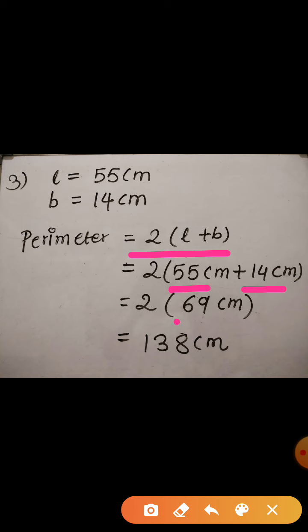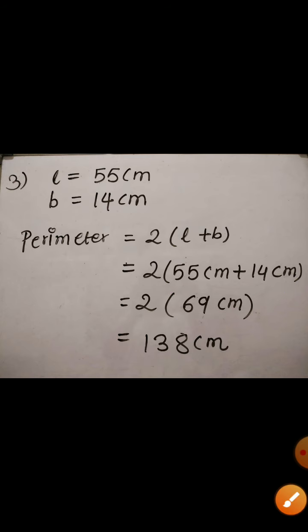Now 55 plus 14 will become 69. And 2 times 69 is nothing but 138. Hence the perimeter is 138 cm. So children, likewise you can find out the perimeter of other objects given in your textbook.